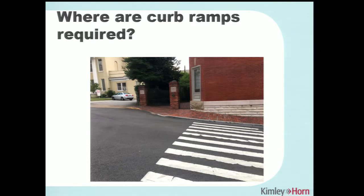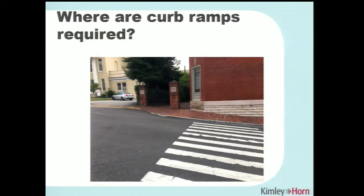Where you have a striped crosswalk but no existing curb ramps, you've invited pedestrians into the street, so you need to fully accommodate them and install curb ramps on both sides. This issue came up when a citizen reported using accessible parking but literally having to lift their mother's wheelchair down into the street to cross because that was the nearest usable crosswalk. It's critical that those accommodations are available.